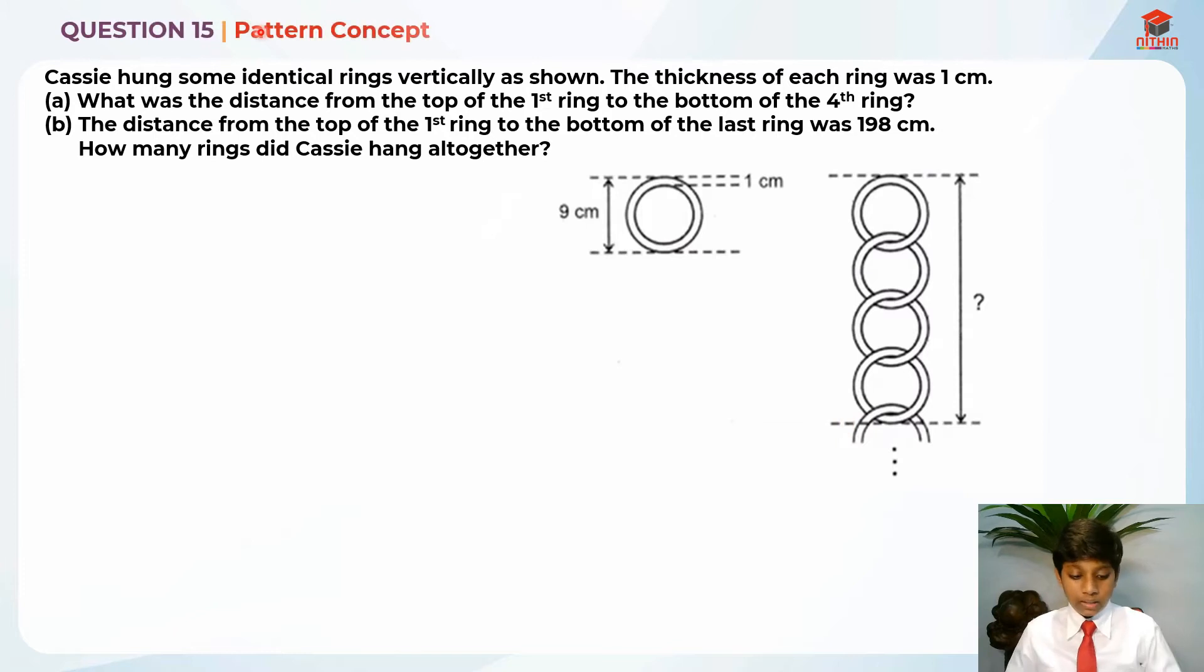This is question 15 and this question is testing us on the pattern concept. So let's read the question for part A first. Cassie hung some identical rings vertically as shown. The thickness of each ring was 1 cm. Part A, what was the distance from the top of the first ring to the bottom of the fourth ring. So this is the first ring, second ring, third ring, fourth ring. And this is the fifth ring on what is going down. So this is for part A, this question mark. So let's highlight the question for part A.